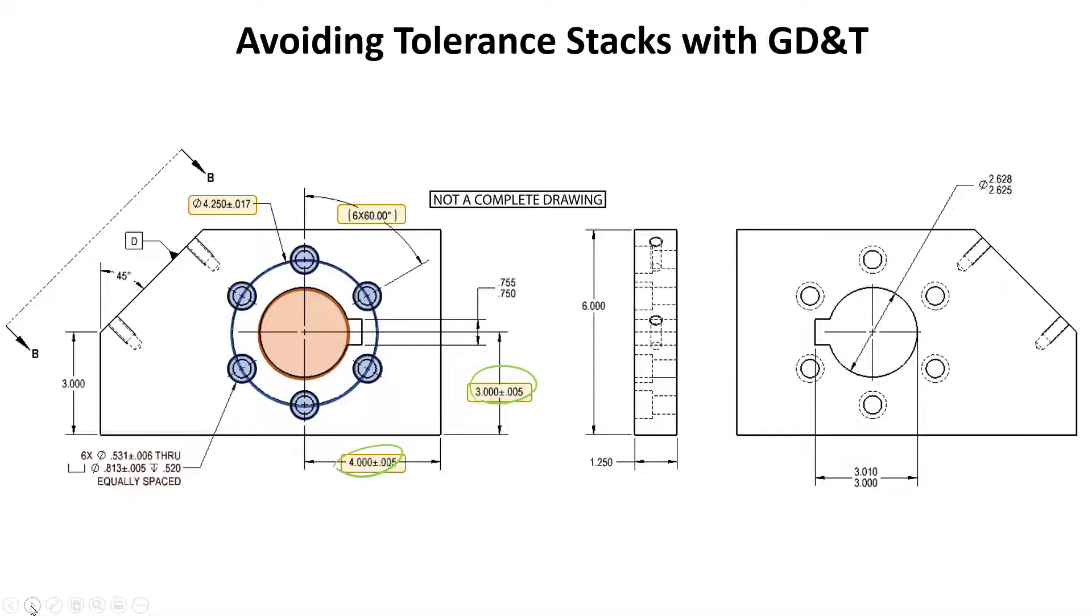Not to mention, there's nothing you could put on this drawing that will actually guarantee the timing of this pattern of holes is in respect to the outside of the part. And keep in mind that if you're dimensioning these holes as feature-to-feature, shown here, this is no different than a chain dimension that causes a locational tolerance stack-up nightmare.